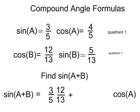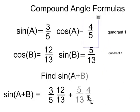Sine B is 5 thirteenths, so I just have to put a 5 thirteenths in there. And the cosine of A is 4 fifths, so I just have to put a 4 fifths in there. Now, I just have to do some work with fractions, and I can find the sin of the sum of those two angles.